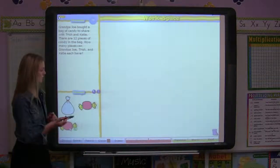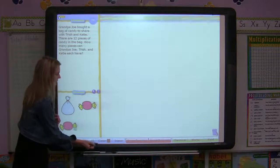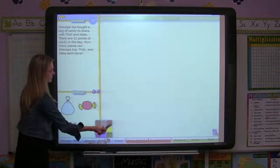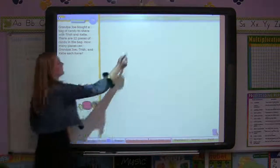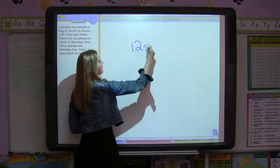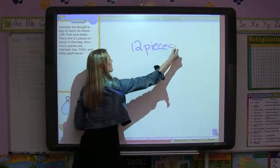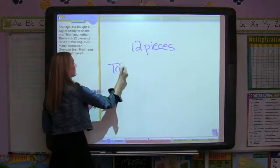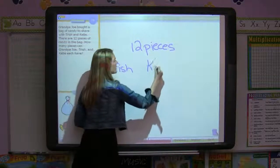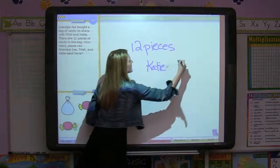So I can choose a pencil. I can choose a color. I'm going to choose blue. 12 pieces of candy. We have Trish, Katie, and Joe.